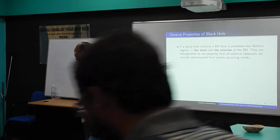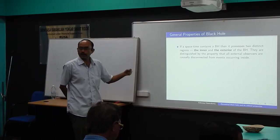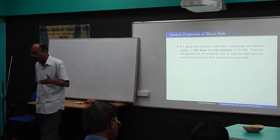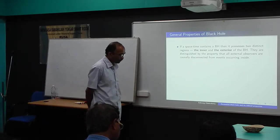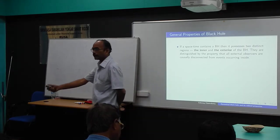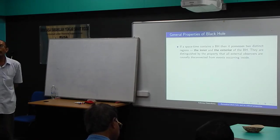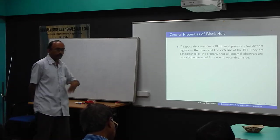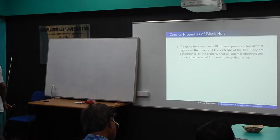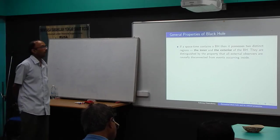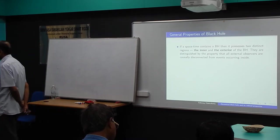We can distinguish them by considering an external observer — an observer outside the black hole — who will be causally disconnected from events occurring inside. That means an observer inside can never communicate with an observer outside. There are two ways to communicate: either by time-like curves, where information propagates at speed less than the velocity of light, or by null curves, where propagation is at the velocity of light.